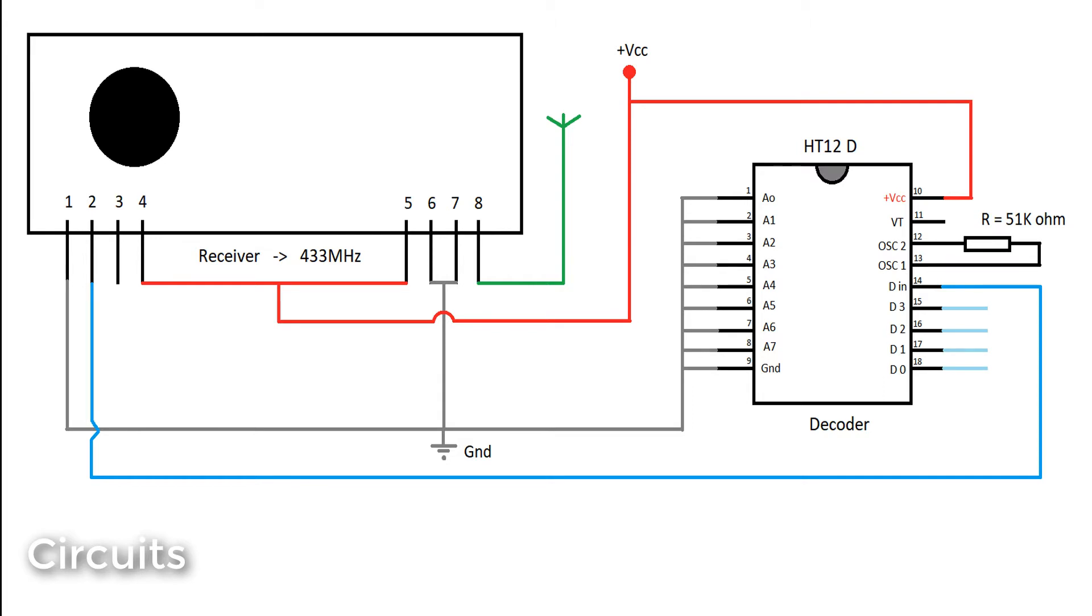Here, the receiver receives the signal from the transmitter through pin number two and decodes the signal for multiple channels.